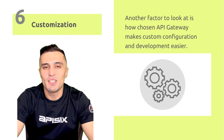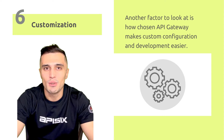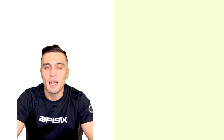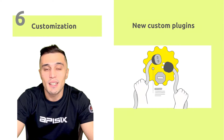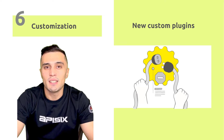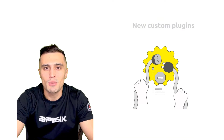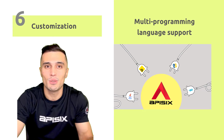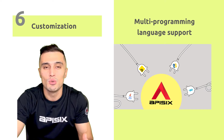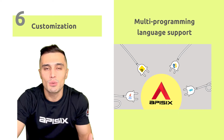Number six is customization. Another factor is how the chosen API Gateway makes custom development easier. Sometimes you need to implement custom plugins to extend the gateway with additional functionality when your requirements are not supported by built-in plugins. For example, Kong offers an open source Plugin Developer Kit (PDK) in various languages — you can build a Kong plugin with Go, JavaScript, Python, and Lua. APISIX offers different plugin runners using the programming language you're familiar with, and has also embedded WASM so you can compile WASM bytecode to run in APISIX.